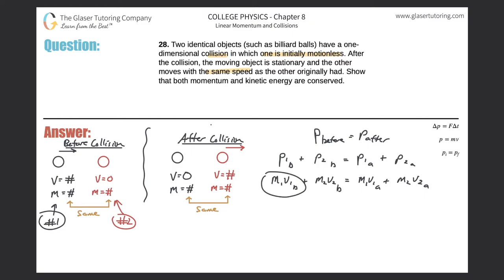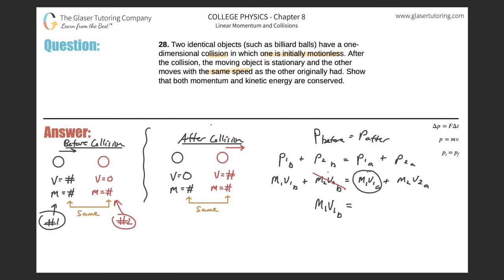The mass of object one times its velocity before the collision gives us m1·v1_before. We add to that m2 times v2 before the collision, but that object — the red ball — was at rest, so this whole term drops out. On the right side, the first object is no longer moving after the collision, so that term also cancels, leaving us with m1·v1_before = m2·v2_after.